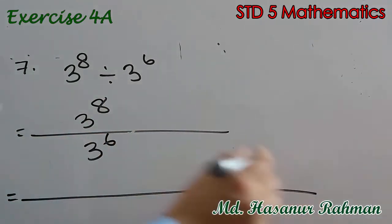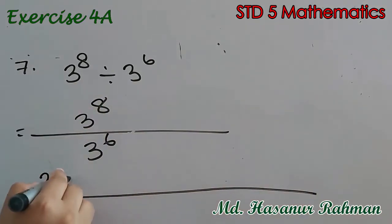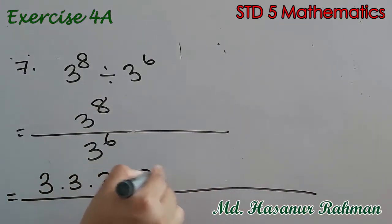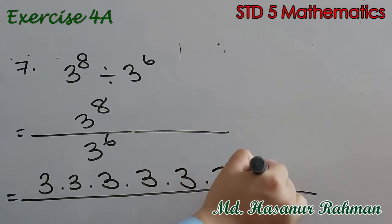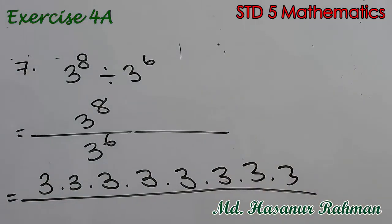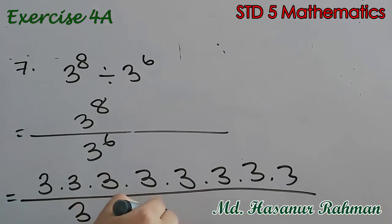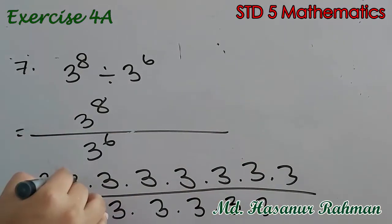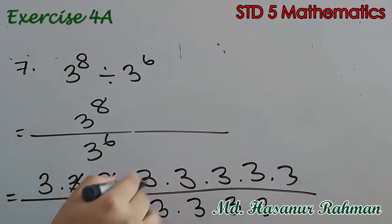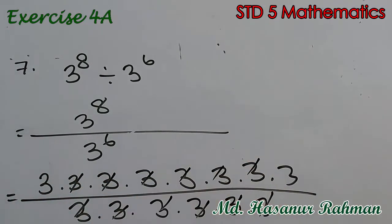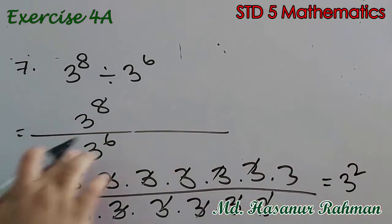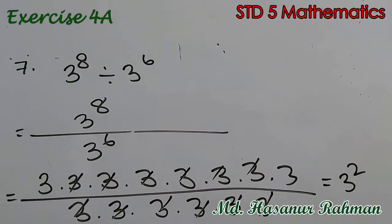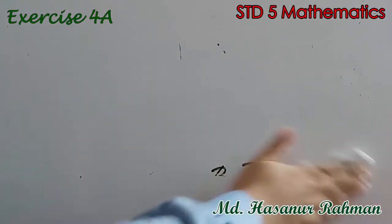3 to the power 8 means 3 into 3 into 3 into 3 into 3 into 3 into 3 into 3. Now you can cancel 3 by 3 six times, and then you will get only 3 squared left — 3 to the power 1 into 3 to the power 1, that is 3 squared.